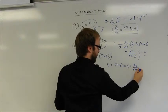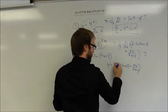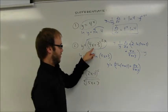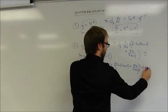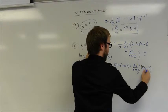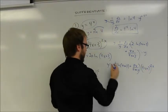it's going to be the 2 ln of 4x plus 3 plus 8x over 4x plus 3. All of that times that original y value, 4x plus 3, taking to the 2x power.